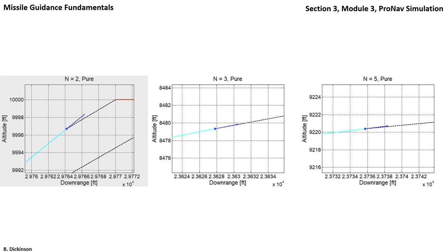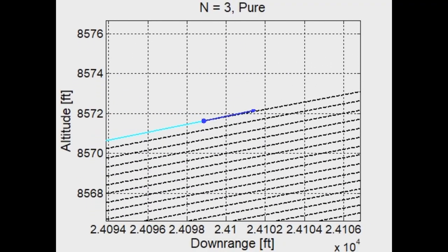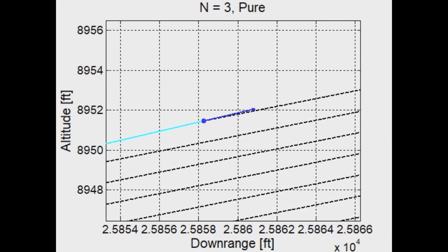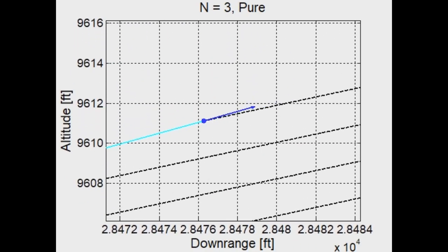And the pursuer is assumed to achieve them, therefore in that case, miss is still very small. N equals 3 we've seen before.